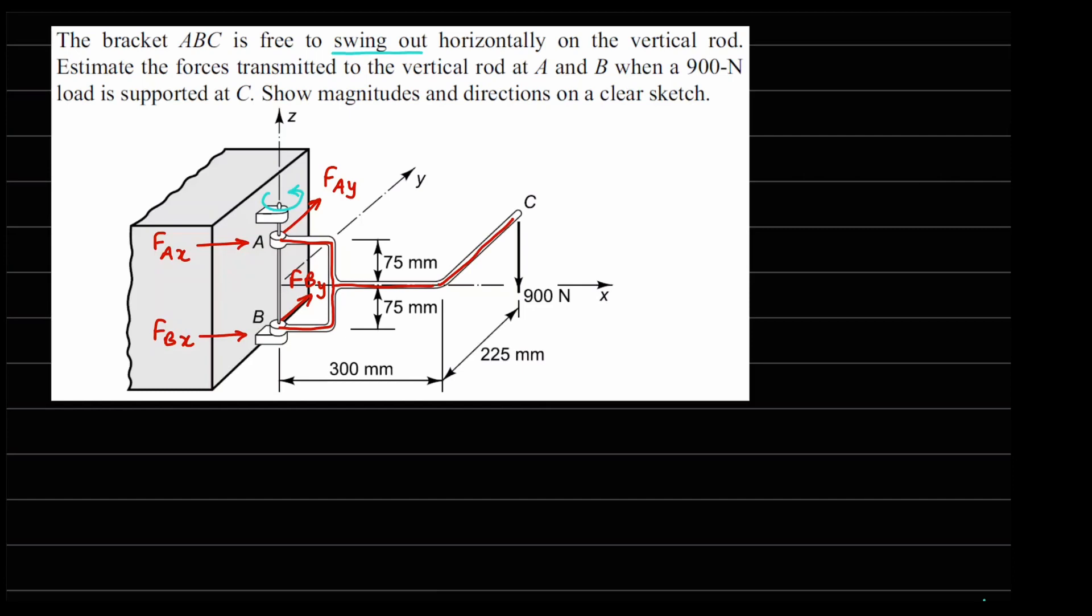However, in the z direction if you notice, only at B point it looks like the motion is restricted. At A point, since it is a slot, it is free to move. So the reaction in the z direction will be only existing at point B and let this is FBZ.